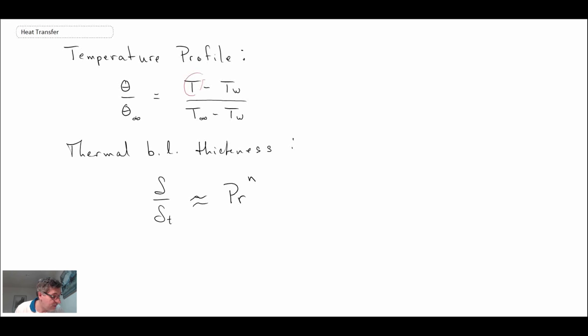And the Prandtl number, this is a number that is used quite often in heat transfer. It is nu over alpha, being our thermal diffusivity. So it is the kinematic viscosity over thermal diffusivity. Another way of expressing it is Cp mu over K. But essentially what the Prandtl number is quantifying is the kinematic viscosity over thermal diffusion, so basically viscous diffusion over thermal diffusion.